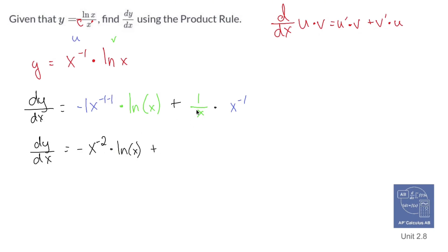I don't like negative exponents, so I'll turn this into one over x. I'm going to make this negative move to the bottom: one over x squared times ln of x. Plus, these are two fractions multiplied together, so one times one is one, x times x is x squared.